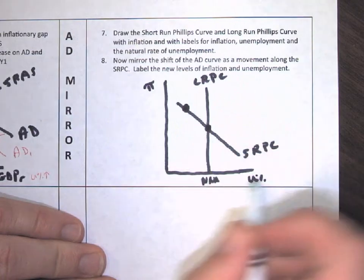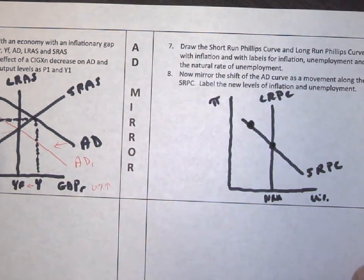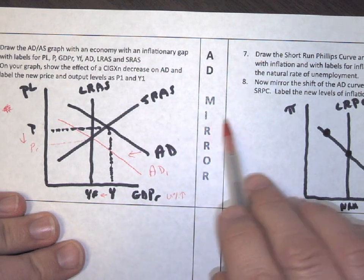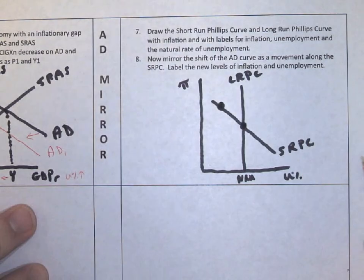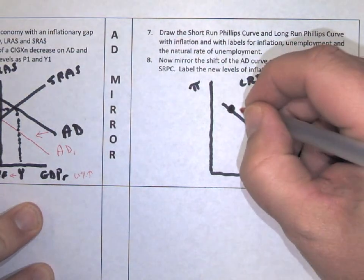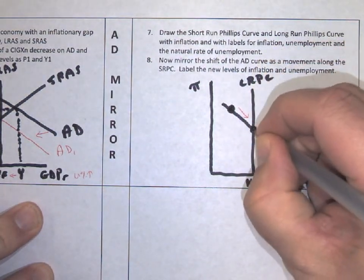Now our goal is to make this reflection. Remember, anytime we have a shift in aggregate demand, it's going to be a movement. We're going to mirror that on the Phillips curve. So if we're at this level right here, we're going to make our movement down to this level.